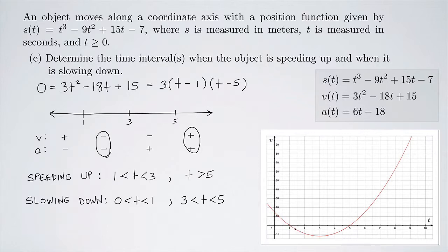After t equals 1, the velocity becomes increasingly negative — negative 1, 2, 3, 4, 5, 6 — but taking the absolute value, those numbers are growing larger, so the object is speeding up. Then from t equals 3 to t equals 5, the velocity is heading back toward zero — negative 10, 9, 8, 7 — but taking absolute value that is decreasing, so the object is slowing down. After t equals 5, the velocity is positive and increasing, so the object is speeding up again.